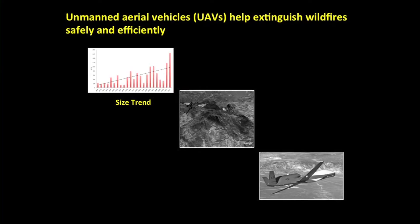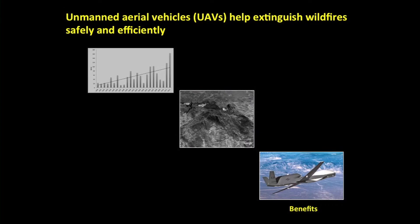One of the ways in which we could solve the problem of fighting wildfires safely and efficiently is through the use of unmanned aerial vehicles, popularly known as drones. Today, I will begin by discussing how wildfires have grown larger and more destructive in recent years. Then, we will explore how drones can gather information and create communication systems for the firefighters on the ground. Last, I will highlight the superiority of drones over manned aircraft.